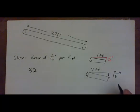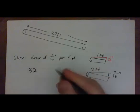So for 32 feet, it's going to be 32 drops of 1/16th of an inch, because it's 32 feet long.